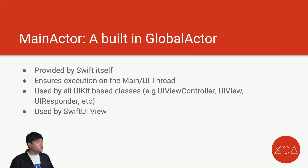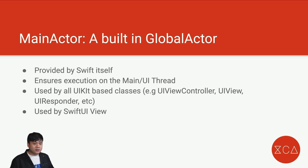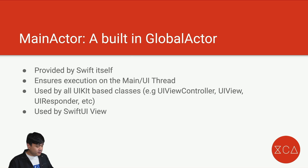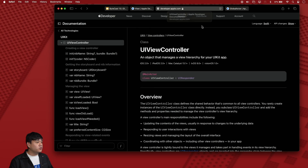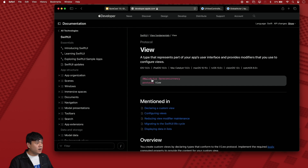Next, main actor. You might have seen this declaration of main actor in error code. As a matter of fact, the view model we use is also marked with the main actor. Swift provides a built-in main actor as a global actor — this ensures that any code marked with it runs on the main thread or UI thread. Almost all UIKit classes, for example UIViewController, UIView, and UIResponder, are marked with main actor to make sure their concurrent execution runs on the main thread to update the UI. SwiftUI's View is also marked with main actor. If you look at the declaration in the documentation, UIViewController is marked with main actor, meaning it always runs within the global actor on the UI thread.